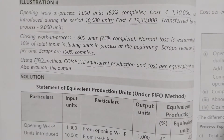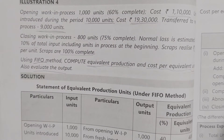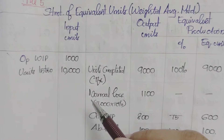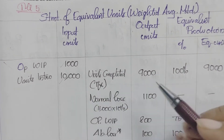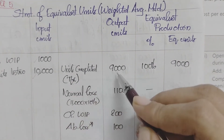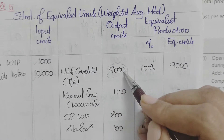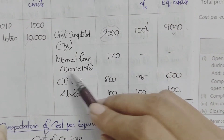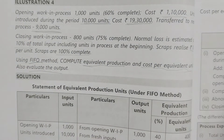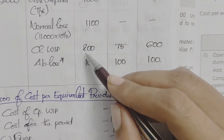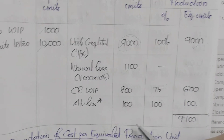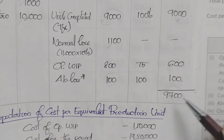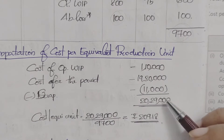Now for the weighted average method: opening WIP 1,000 units plus units introduced 10,000 gives total input 11,000. Units transferred to next process 9,000 are assumed 100% complete — equivalent units 9,000. Normal loss 1,100 units. Closing WIP 800 units at 75% = 600 equivalent units. Abnormal loss 100 units at 100% complete. Total equivalent units = 9,700.